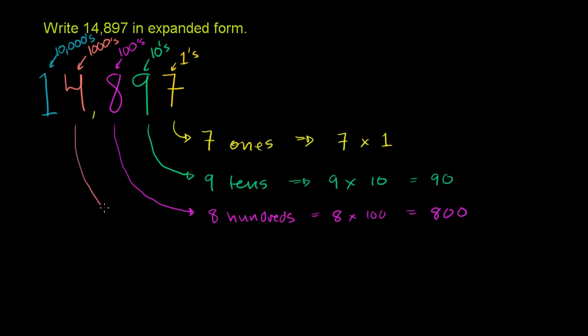And then the 4. I think you get the idea here. This represents, in the 1,000's place, it represents 4 thousands. Which is the same thing as 4 times 1,000. Which is the same thing as 4,000. 4,000 is the same thing as 4 thousands added up.